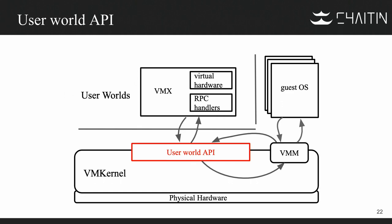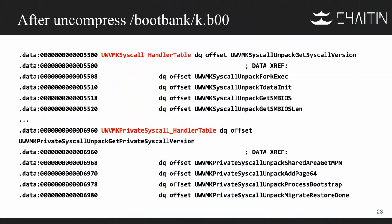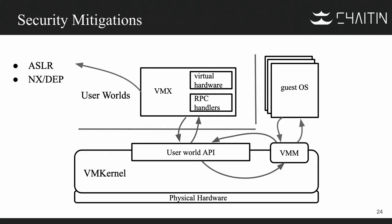The second reason ESXi is so difficult is the User World API. VMX uses many undocumented custom systems. Writing code for VMX is difficult because we don't know which messages it uses. Fortunately, we managed to find two syscall tables after decompressing the binary. We found two symbols that are useful for reversing and generating some VMX code. There are also security protections such as ASLR and NX.